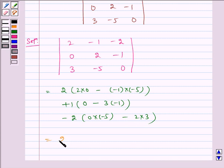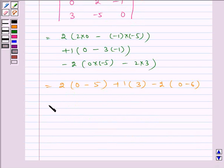Which is equal to 2 into (0 minus 5) plus 1 into 3 minus 2 into (0 minus 6). Which is equal to 2 into (-5) plus 3 minus 2 into (-6).